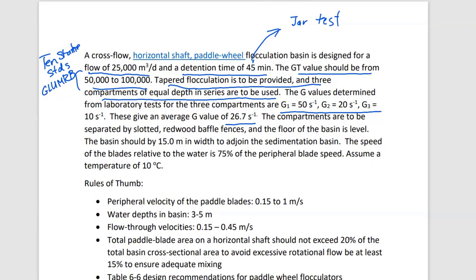Why do we use a three-compartment flocculator? We do not want particles to settle in the flocculation unit — we want them to settle in the sedimentation basin that follows. The correct reason is: we want to ensure that the particles do not break apart as they grow larger. We are creating particles that aggregate together to form larger ones, and we want those larger particles to settle in a reasonable time — typically two to four hours in the sedimentation basin. If they break apart, we're back to smaller particles that won't settle.